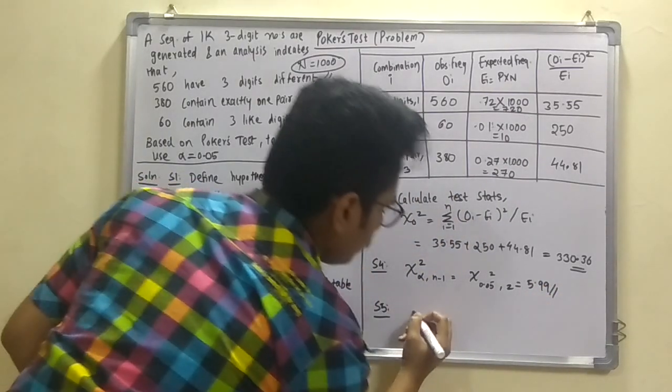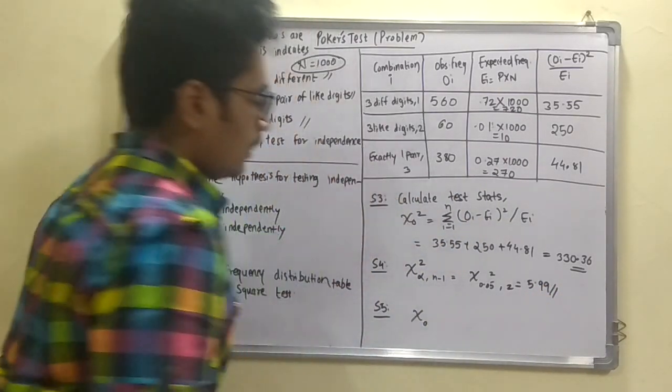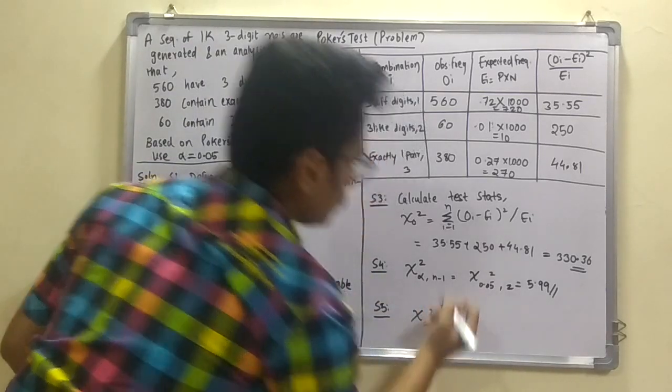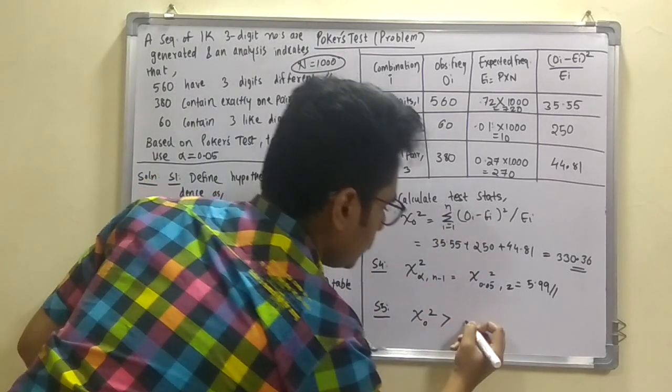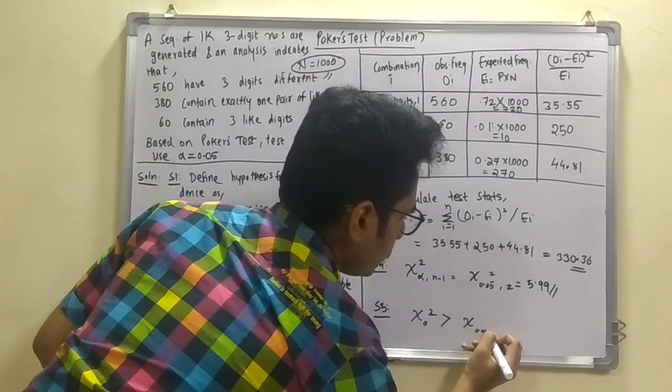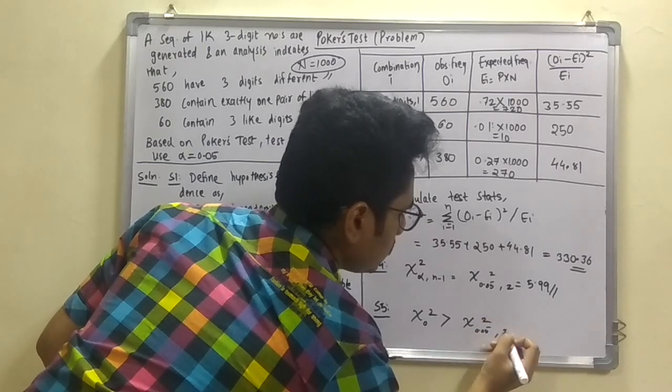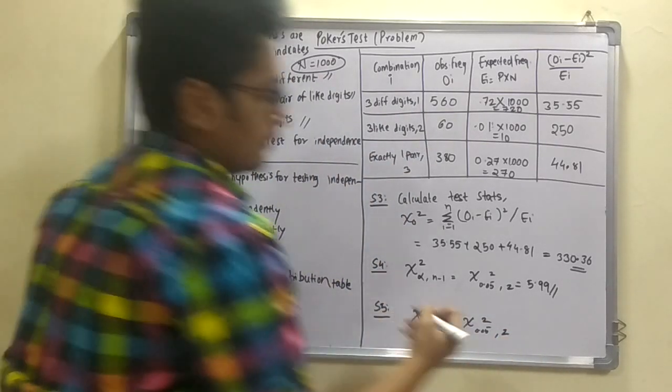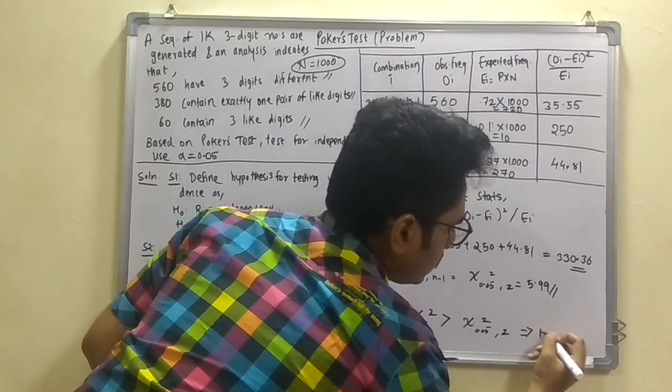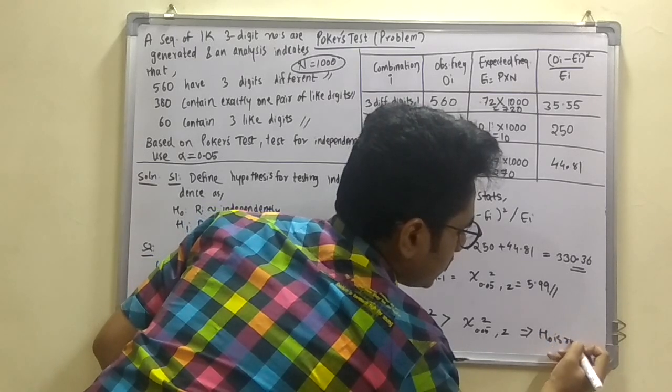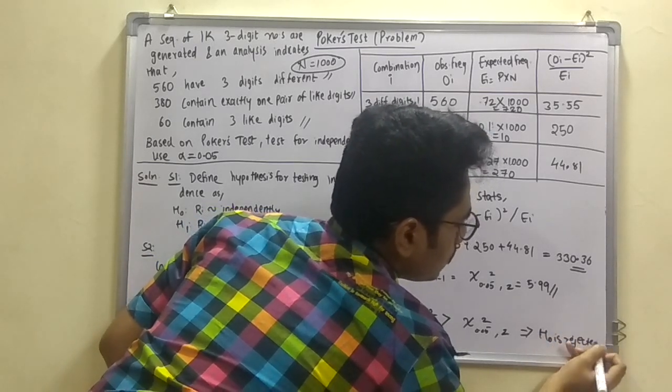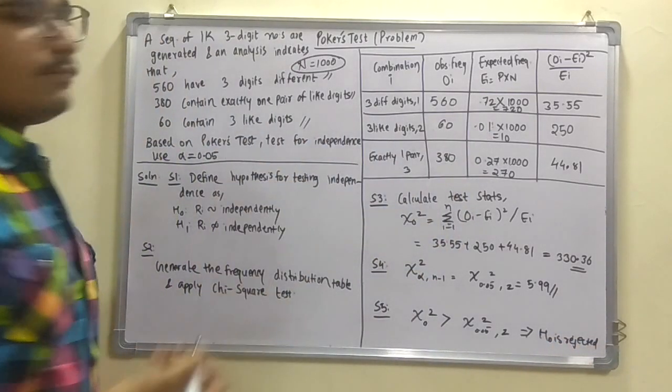And now you have to compute this. That is the chi zero square. The value of this is bigger than this one. That is 0.05 square with this two. So you can see that the hypothesis is rejected. And so the numbers are not uniformly distributed.